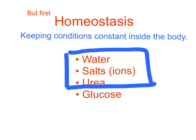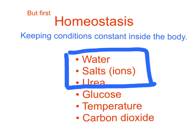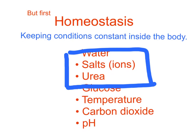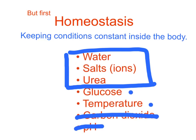The level of glucose needs to be kept constant — the blood sugar level — and we'll look at that in a separate video, though we've already discussed insulin and diabetes. We'll also look at how temperature is controlled. Carbon dioxide level has been mentioned when we did the respiratory system, so that's kind of dealt with already. And there's pH, though we don't really need to focus on that. In this video we're going to focus on water, salts and urea, all regulated by the kidney.